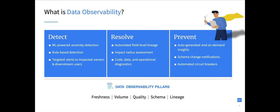A data observability platform uses those five pillars in the background — collecting metadata, logs, and metrics — to detect issues using machine learning, finding anomalies of freshness, volume, dimensional changes, or changes in mean. It provides tools to resolve problems through automated lineage impact assessment and root cause analysis, and to prevent data incidents via circuit breakers and schema change notifications. About a third of our customers are involved in some form of data mesh. We have large customers like Roche Diagnostics, who are a poster child for data mesh, and we're supporting that journey for them.